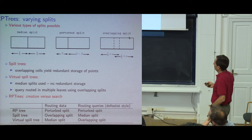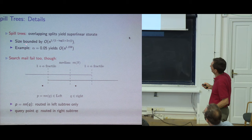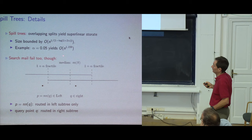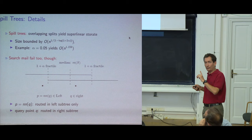For spill trees, the size is bounded as a function of alpha: for example, with 5% alpha you gain 15% in memory overhead. There is a tradeoff between storage and the probability of query failure.